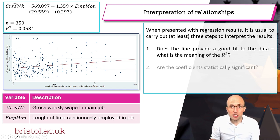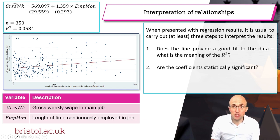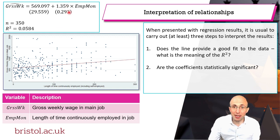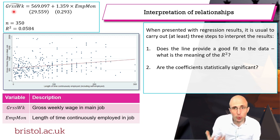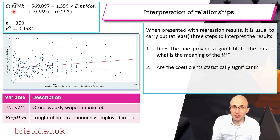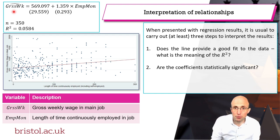The second stage is to ask whether or not the estimated coefficients are statistically significant. If the coefficient on our explanatory variable is equal to zero, that would tell us that our explanatory variable had no impact on the dependent variable. So we need to test whether or not these coefficients are statistically significant — if they're not, we'd be saying they're not significantly different from zero.